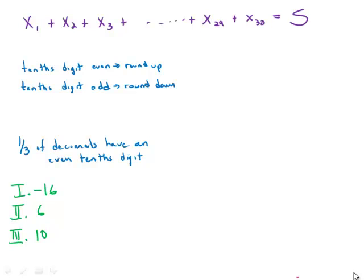The estimated sum of the 30 decimals is defined as follows. Each decimal whose tenth digit is even is rounded up to the nearest integer, and each decimal whose tenth digit is odd is rounded down to the nearest integer.